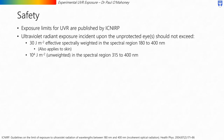Safety is of course very important as UVR can present a hazard to human health. Exposure limits for UVR are published by the International Commission for Non-Ionising Radiation Protection and are summarised as follows. Ultraviolet radiant exposure incident upon the unprotected eyes should not exceed 30 joules per metre squared effective spectrally weighted in the spectral region of 180 to 400 nanometers, and 10 to the power of 4 joules per metre squared unweighted in the spectral region of 315 to 400 nanometers. Both of these criteria must be met, and the first limit also applies to exposure incident upon the skin.